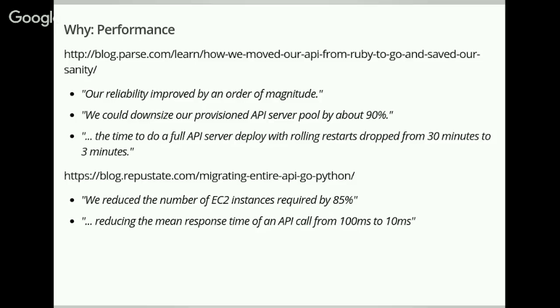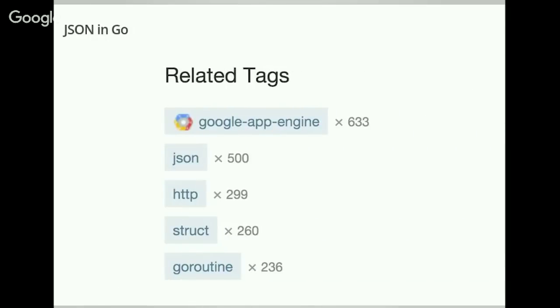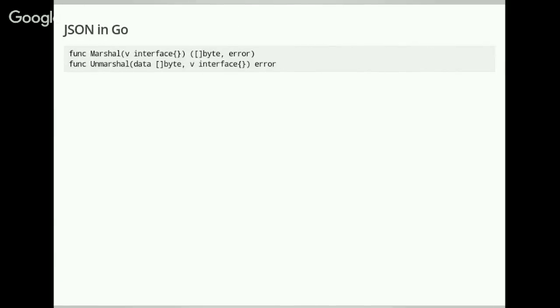Now to the actual technical details, and first about JSON. You might think, why is this guy talking about JSON? JSON is so simple. But in Go, there are some gotchas. Especially if you come from Python, as I did, there are some traps you have to take into account. This is the related tags on Stack Overflow for Go, and the second most related tag is JSON — so apparently, behind Google App Engine being confusing, JSON is also confusing.